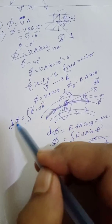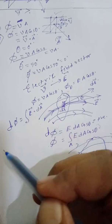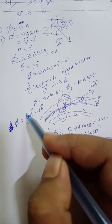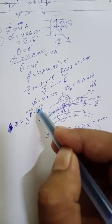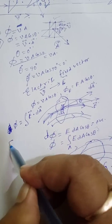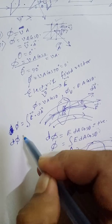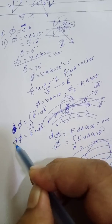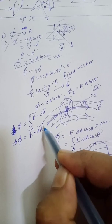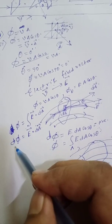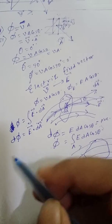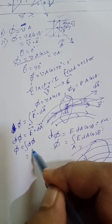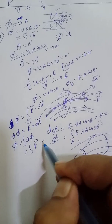dA is the elementary area, and d phi is the flux linked with the elementary area. If you want the flux linked with the total area, then phi will be equal to integration of d phi, which is equal to integration of E dot dA.